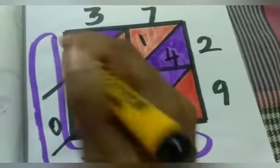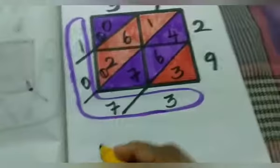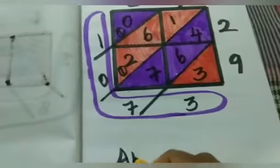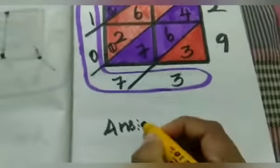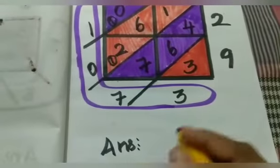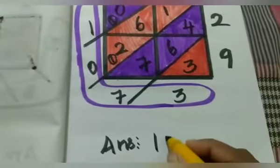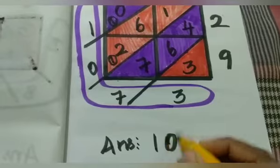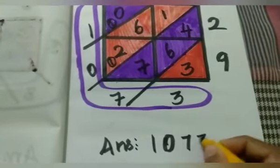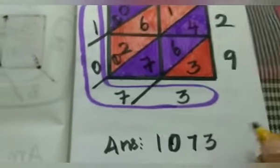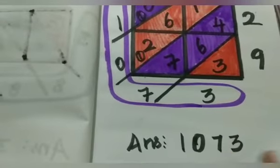1 plus 0 is 1. So the answer is 1, 0, 7, 3 — the answer is 1,073.